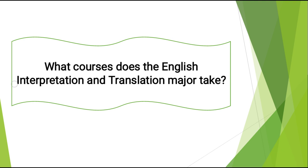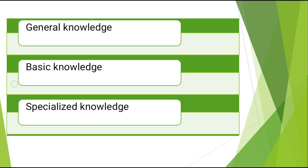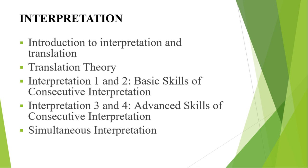What courses does the English Interpretation and Translation major take? The major at Concord University has subjects designed specifically and separately for both English interpretation and English translation. In addition to general and basic knowledge, students can also study specialized knowledge in interpretation, including introduction to interpretation and translation, translation theory, and interpretation levels one through four covering basic and advanced skills of consecutive and simultaneous interpretation.